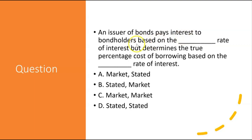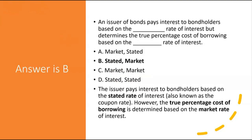Summary question: an issuer of bonds pays interest to bond holders based on the stated rate of interest, but determines the true percentage cost of borrowing based on the market rate of interest. The issuer pays cash interest based on the coupon or stated rate; however, the true percentage cost of borrowing is determined based on the market rate.